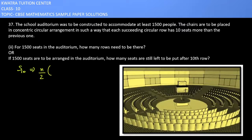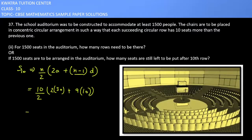S_10, the same formula, n by 2, 2a plus n minus 1d. n is 10, 10 by 2, 2a, a is 30, n is 10, 10 minus 1 is 9, d is 10. So 10 by 2 is 5, 2 into 30 is 60 plus 90. 60 plus 90 is 150, and 150 into 5 is 750.